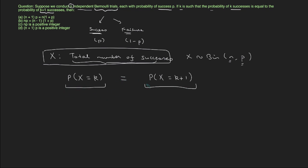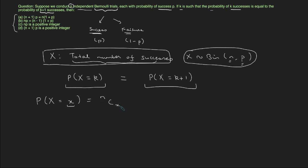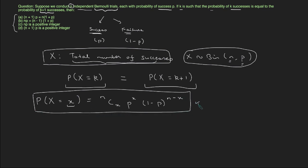We have to utilize this information to check which statement is true. Because X follows a binomial distribution, we can directly use the binomial probability distribution function. So the probability that X equals x is equal to N choose x, multiplied by P raised to the power x, multiplied by 1 minus P raised to the power N minus x. This is the PMF for a binomial random variable, and I'm going to use this to find the two probabilities. Here N is the number of trials, x is the particular value, P is the probability of success, and 1 minus P is the probability of failure.